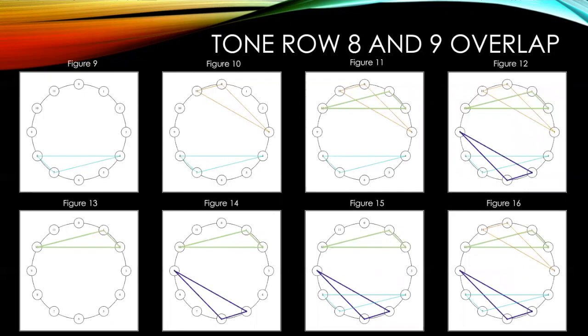Here you can see the entire progression of the two tone rows in their overlap, starting in figure 9 with tone row 8 and progressing to the end of tone row 9 in figure 16. Between the mirror builds, the tone row overlaps, and just the general nature of how many tone rows there are within this piece, believe it or not, it took more than 700 images to create an accurate geometric interpretation. But I'm thrilled to say the end result is absolutely worth it. This video allows my geometric interpretation to accompany the piece in real time, so you can see the sets and the tone rows as they happen—which in my opinion is pretty cool.